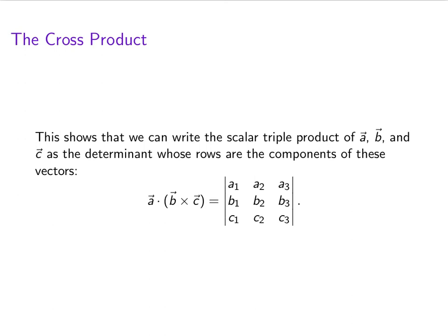So you don't actually have to compute b cross c first. If your end goal is to compute a dotted with b cross c, then you can do it in one shot using a third order determinant.